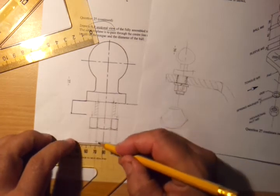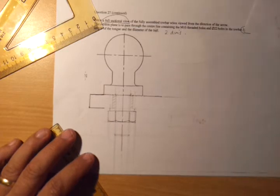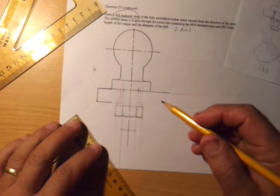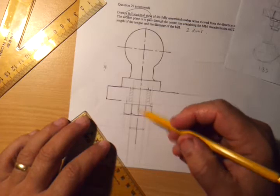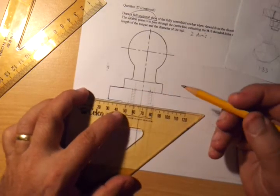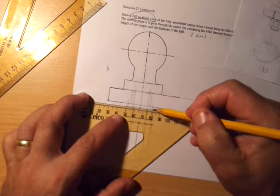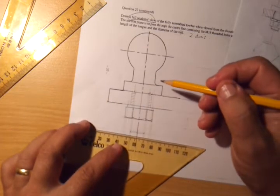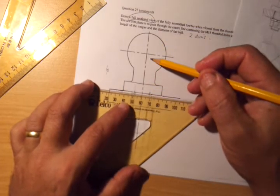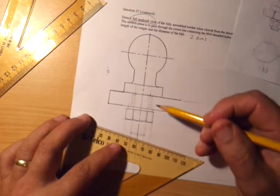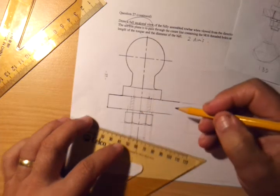Draw across to indicate the thread. Things getting in my way, pencil sharpeners. Okay, now it's time to start getting serious with this and completing it. Now sectioned areas. The washer's not going to be sectioned, so I can go all the way along here no problems.